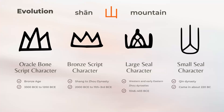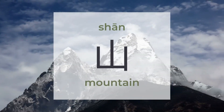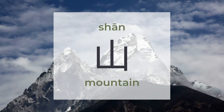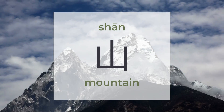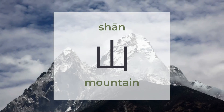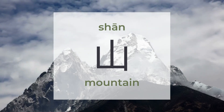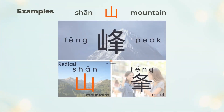山 means mountain. There are around 636 characters to be found under 山. 山 is a pictogram with one form. 山 mainly shows on the left; however, it also shows on the top or bottom. There are three examples for 山, and you'll see 山 appears in different places.